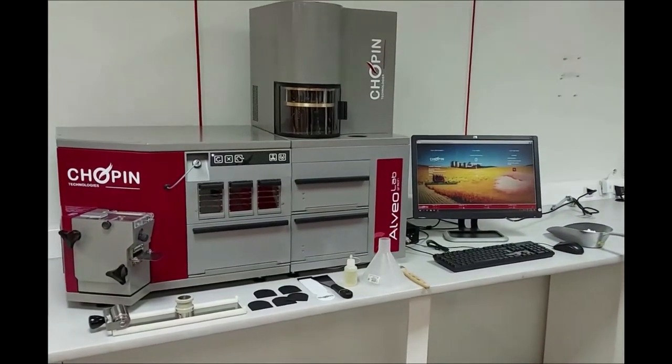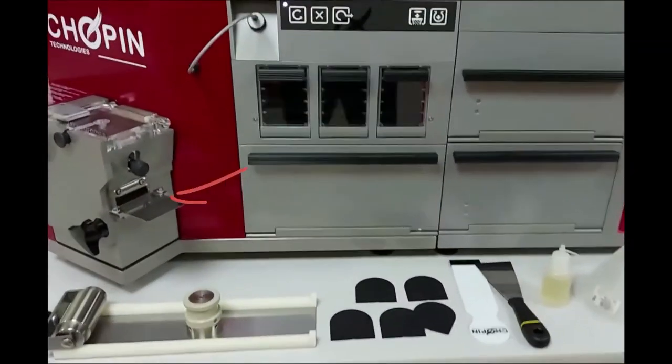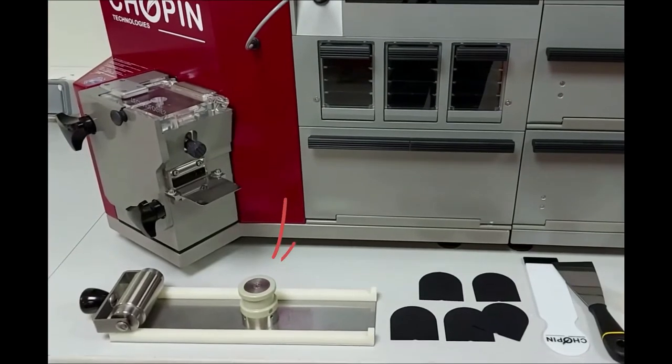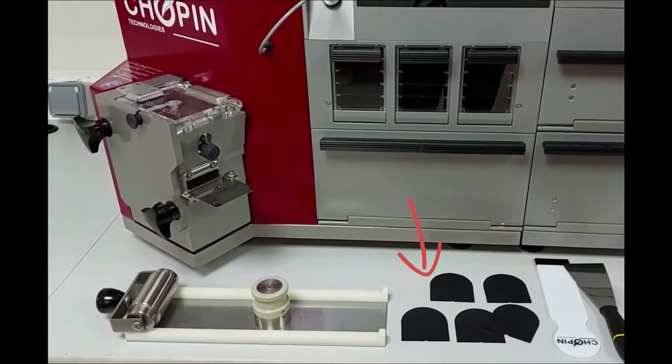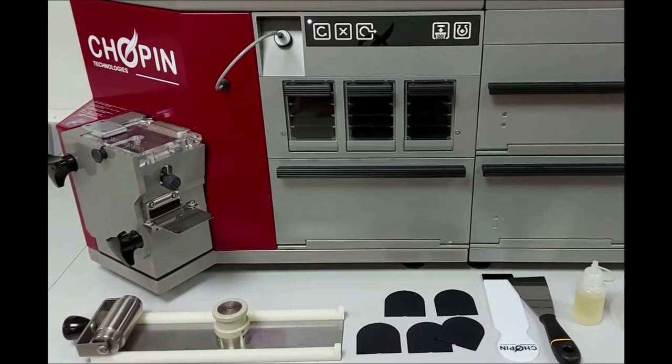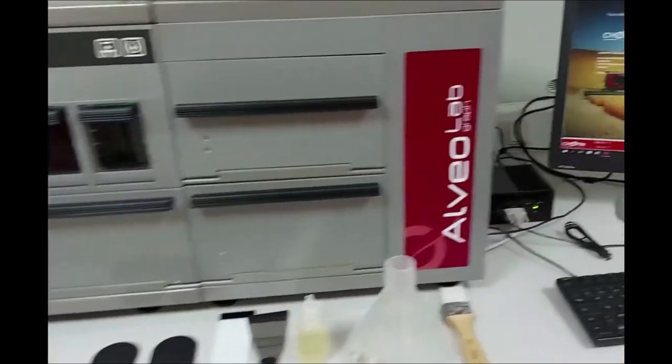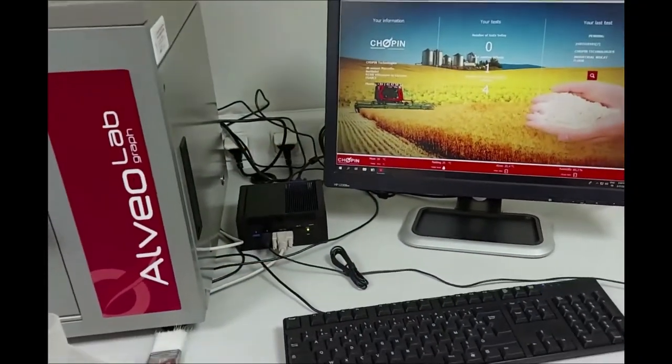Additionally, the alveolab comes with all the accessories necessary to manage the dough. The extrusion plate, the steel roller, the cutter, the laminating plate, the resting plates, a knife and a spatula, and a dropper for the oil. It also includes a filling hopper, a brush, and a mini PC which is a central unit dedicated to run the alveolab.